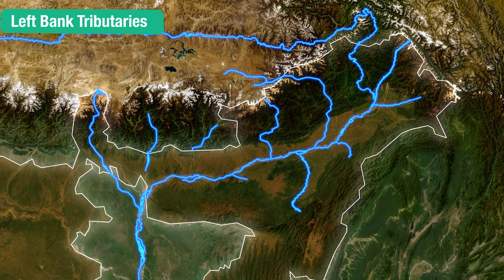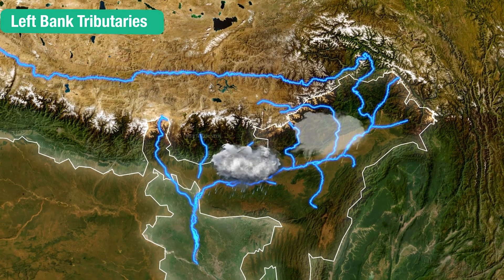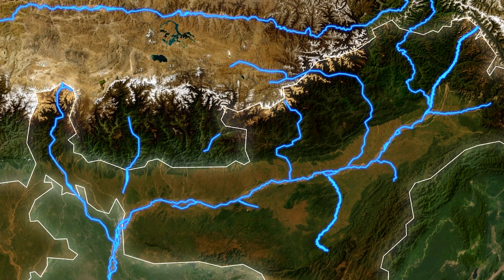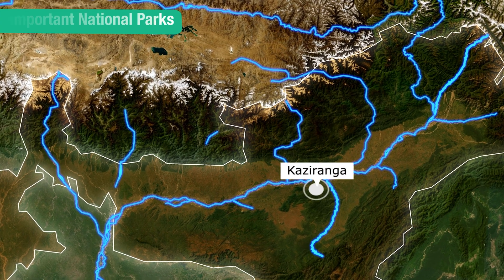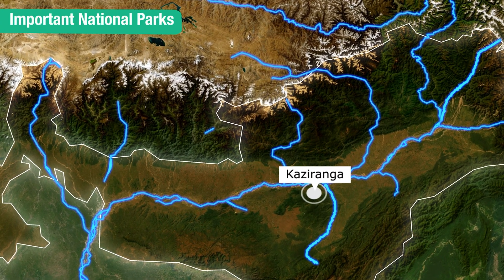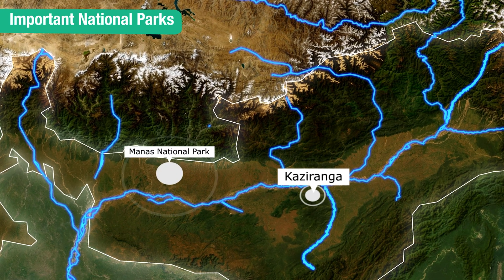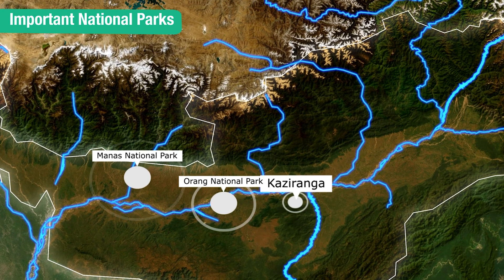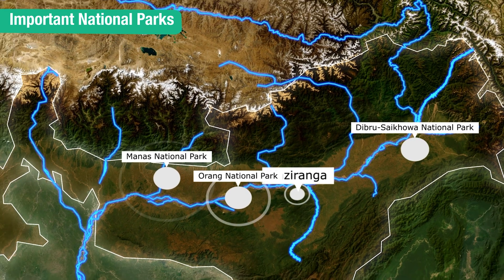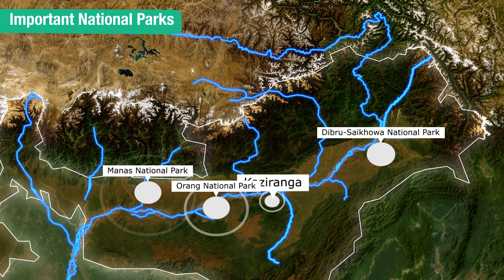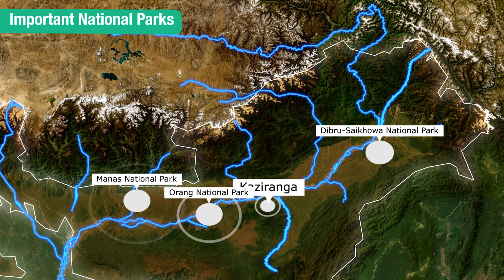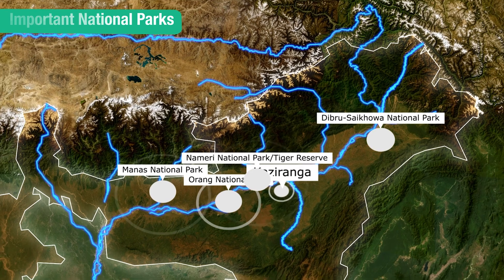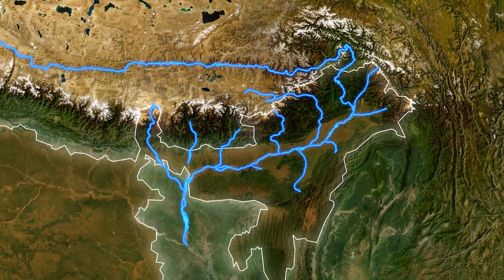These tributaries, many of which originate in regions of heavy rainfall, bring vast quantities of sediment. The most important national park along the river is Kaziranga National Park along the floodplains of the Brahmaputra. Other key parks include Manas National Park along the Manas river, Orang National Park along the north bank of the Brahmaputra, Dibru-Saikhowa National Park located between the Brahmaputra and Lohit rivers, and Nameri National Park along the Jiabereli river.